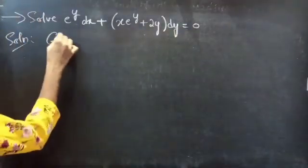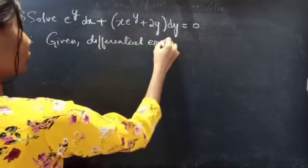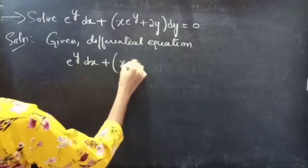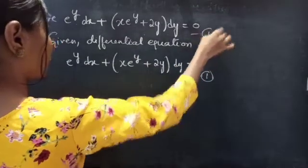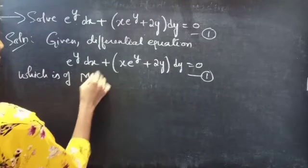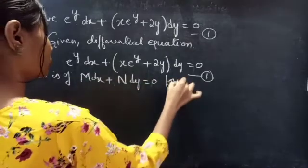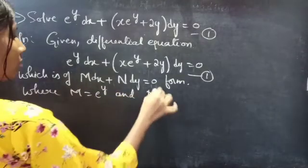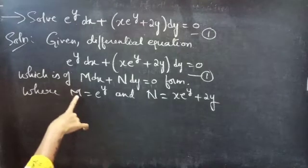Given differential equation: e power y into dx plus x into e power y plus 2y into dy equals to 0. Consider it as equation 1, which is of the form M dx plus N dy equals to 0, where M equals to e power y and N equals to x into e power y plus 2y. By comparing these two, we will get M and N.